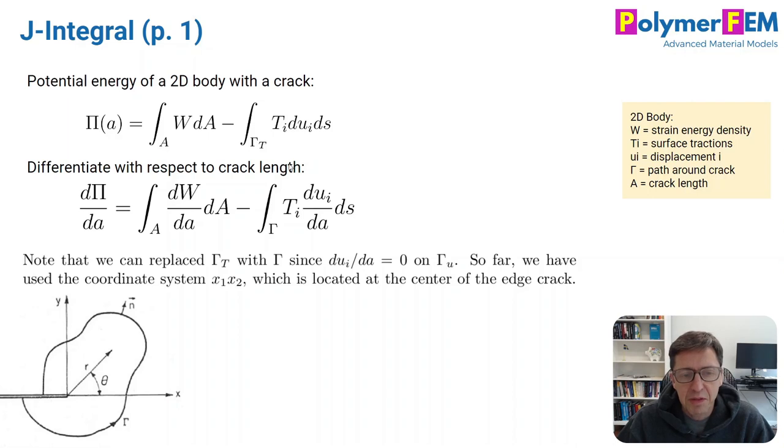We can replace the path here from just the portion of the path where the traction is applied to all of the paths because the region of the body where there is no displacement goes away. So we can replace this path with a complete path. So that's very nice.